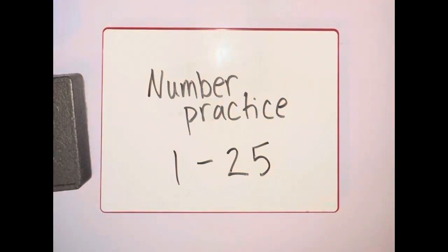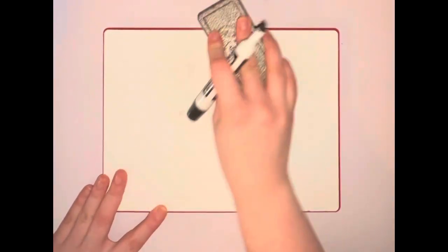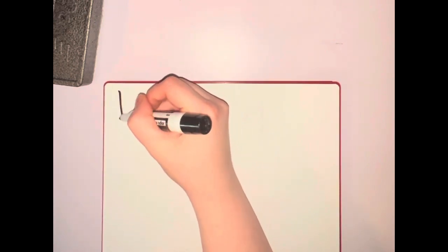Number practice 1 through 25. You're going to start at the top side of your board. Up and down one.